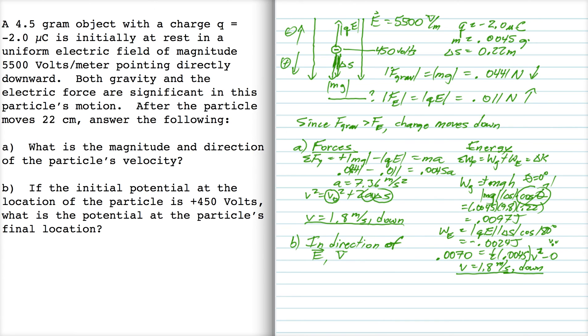If you are moving in the direction of the electric field, then the voltage decreases. So down here is going to be lower voltage. Up here is higher voltage. Electric field lines always run from higher voltage to lower voltage.